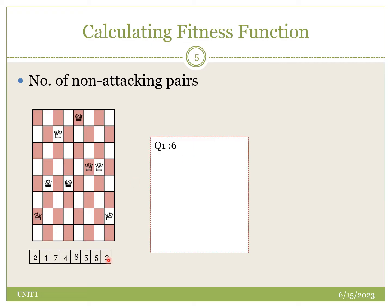For the second queen, placed in the fourth position, we again check horizontal, diagonal, row-wise, and column-wise positions. Here, there is one attacking queen row-wise, so out of six remaining, five are non-attacking. Therefore, the non-attacking count for queen 2 is five.